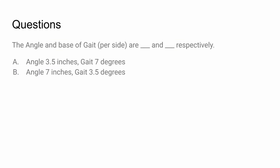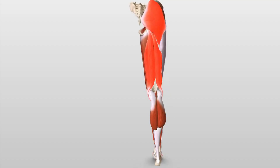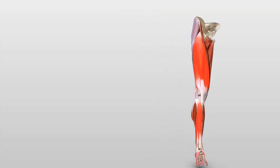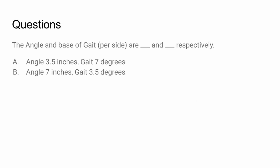The angle and base of gait per side are blank and blank respectively. This question is answered by recalling that the angle of gait is about 3.5 inches and the base of gait is about 7 degrees — that's 7 degrees abducted per side, or about 12 to 15 total.